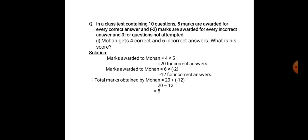Now let us move on to our word problem. In a class test containing 10 questions, 5 marks are awarded for every correct answer and minus 2 marks are awarded for every incorrect answer and 0 for each question that is not attempted. For every correct answer, 5 marks are given. For every incorrect answer, 2 marks are deducted, so it is minus 2 marks. And if the question is not attempted, marks given are 0.